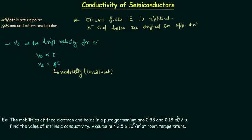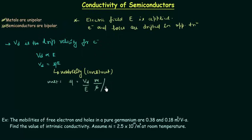Let us find out the unit for mobility Mu. Mu equals Vd divided by E. Vd is velocity, having units of meters per second. E is electric field intensity, which in terms of potential difference can be written as volts per meter. So the unit of Mu is meter squared per volt-second.